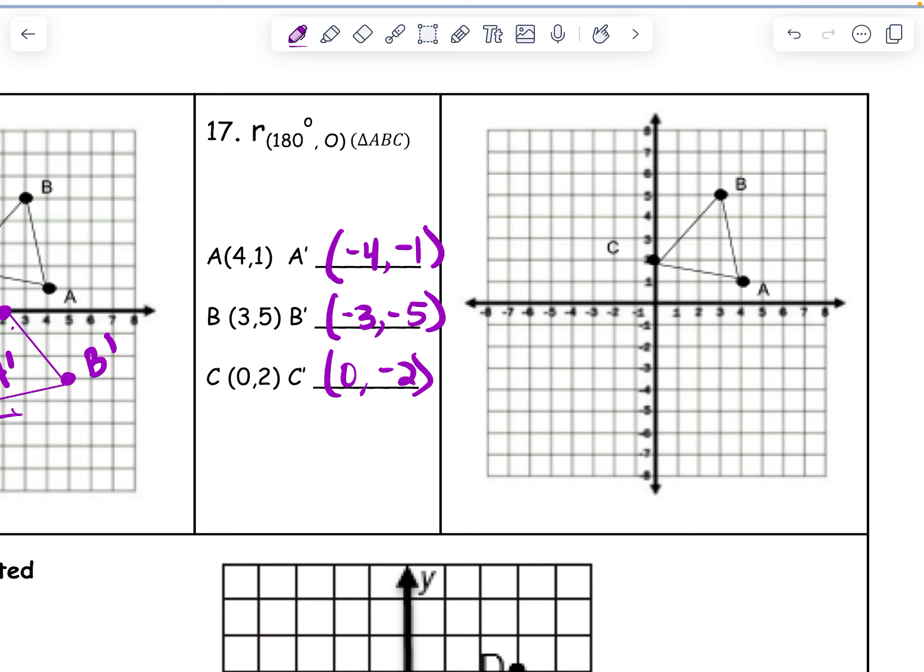If you wanted to rotate your paper so your paper is upside down, you're going to end up with the same solution. So I'm going to have negative 4, negative 1 is a prime. B is at negative 3, negative 5, b prime. And c is at 0, negative 2, c prime.